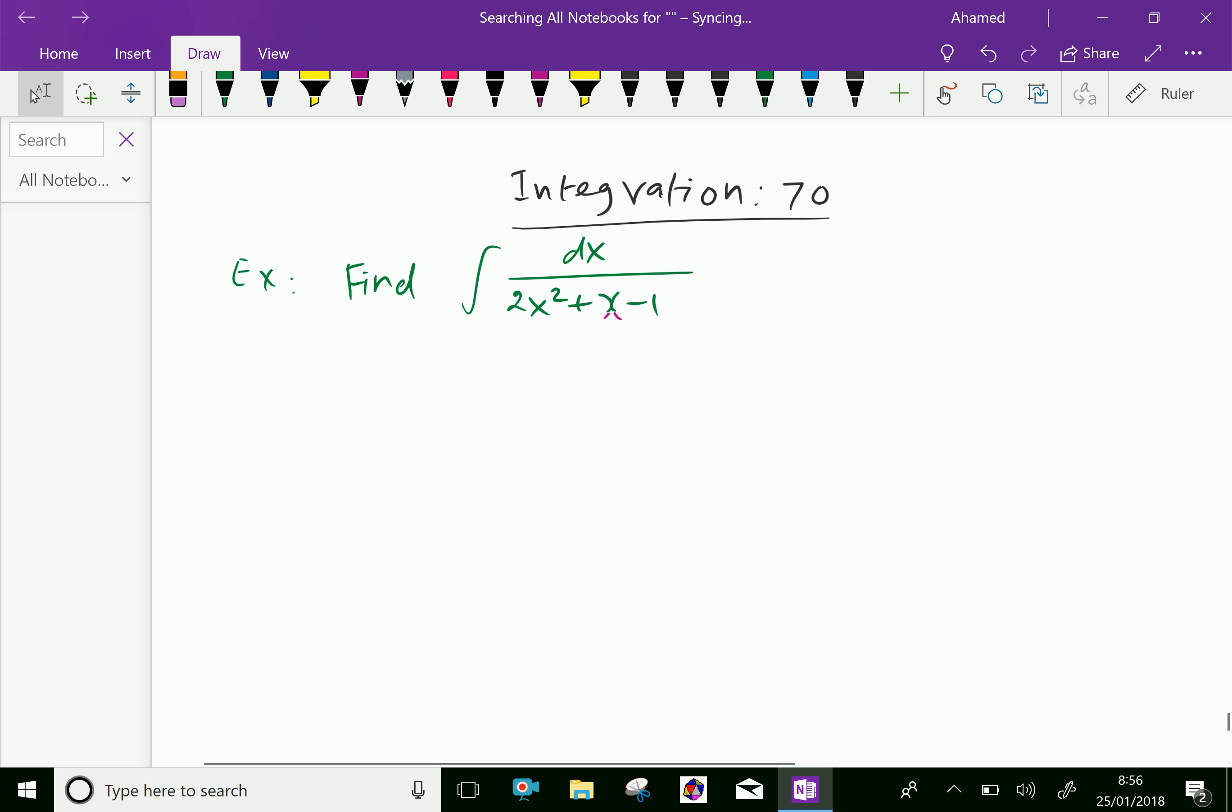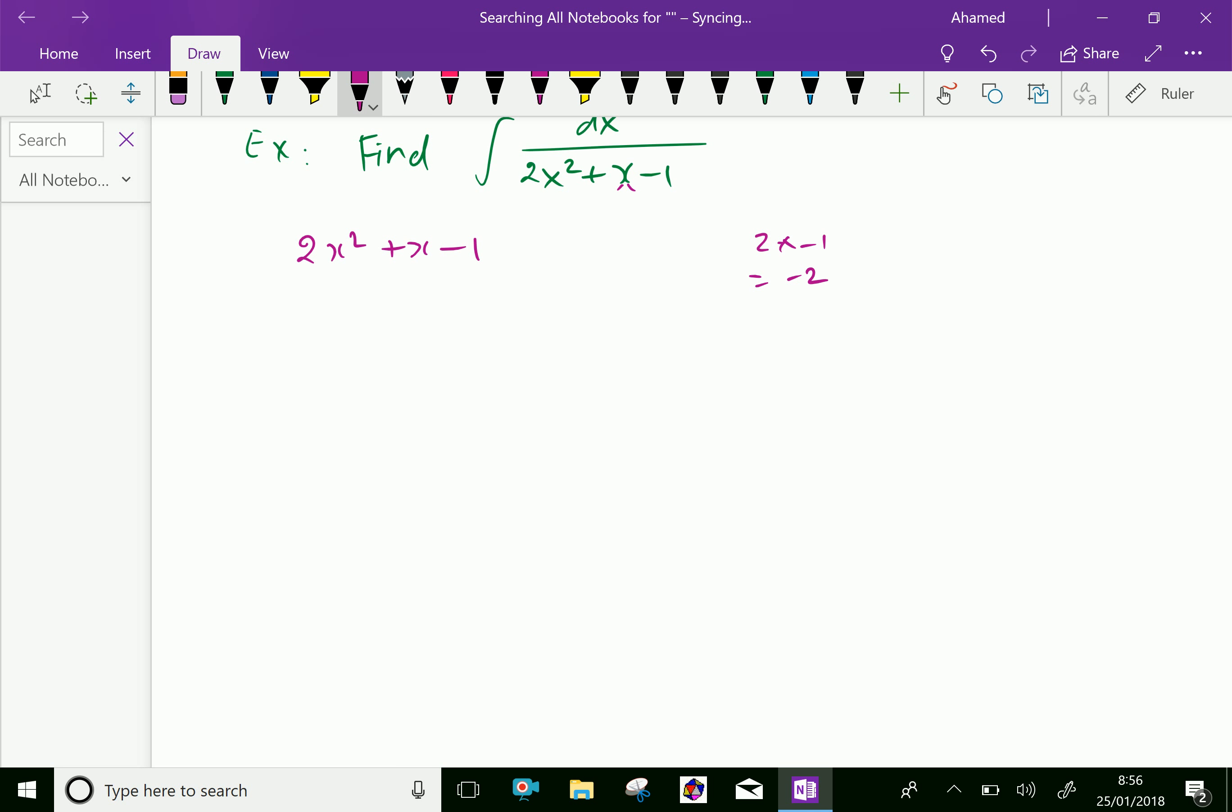First, let us write the quadratic function that is 2x square plus x minus 1. Let us factorize this first. Here, the last term is 2 into minus 1, which equals minus 2. Split minus 2 as 2 and minus 1. So, 2 into minus 1 is minus 2, plus 2 minus 1 is 1, that middle term. So, we split the middle term like 2x square plus 2x minus x minus 1.